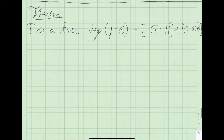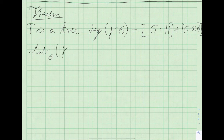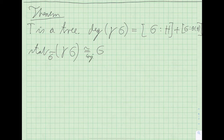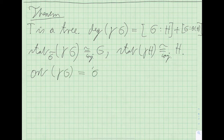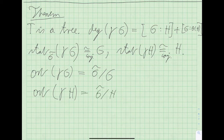This is actually a regular tree because all vertices have the same valency. The stabilizers of a vertex are all conjugate to the group G itself, and similarly, stabilizers of edges turn out to be conjugate to H.